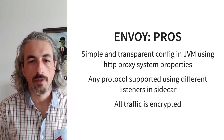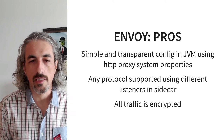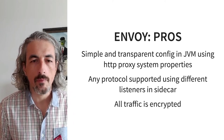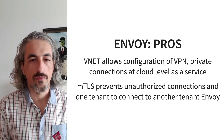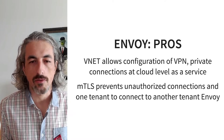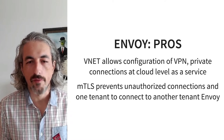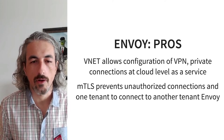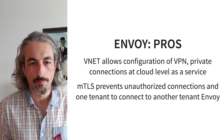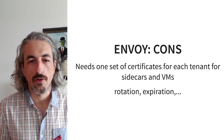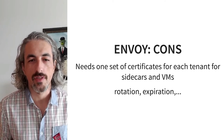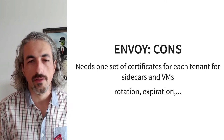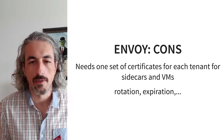We can also support any other protocols, not only HTTP, by using different listeners on the Envoy sidecar, and all traffic from that pod to the VMs is encrypted. The virtual network on Azure allows configuration of VPN and private connections at the cloud level as a service. mTLS prevents unauthorized connections and also prevents one tenant from connecting to another tenant's Envoy. The main issue is that we have to manage one set of certificates for each tenant — for sidecars and for VMs — which involves rotation, expiration, and complexity over time.